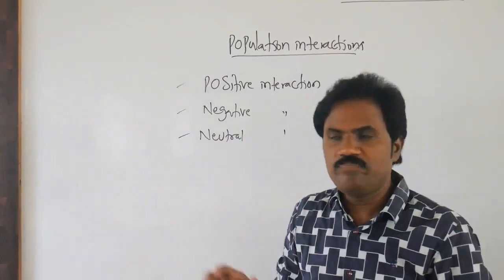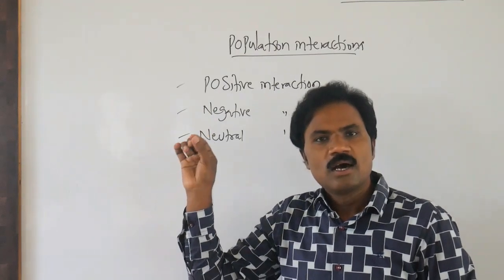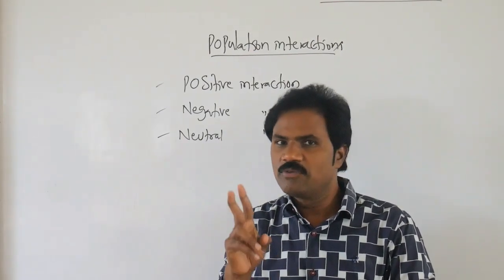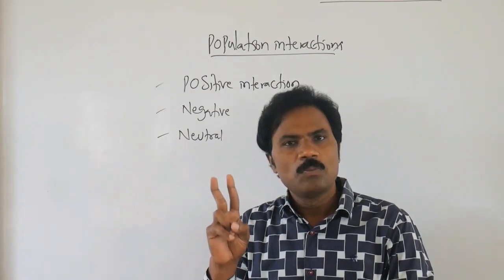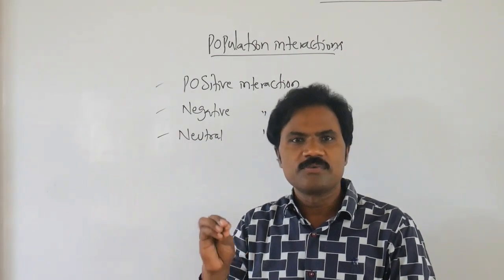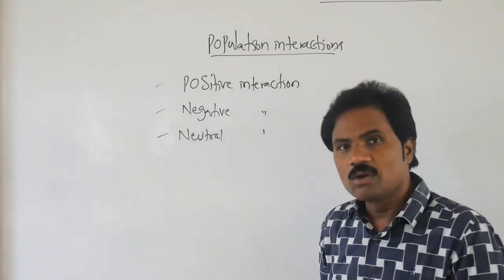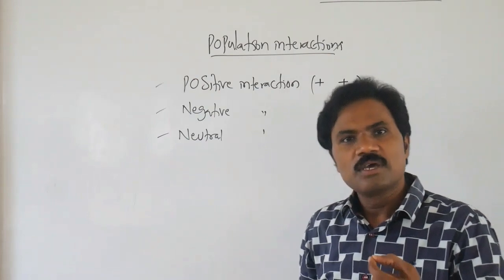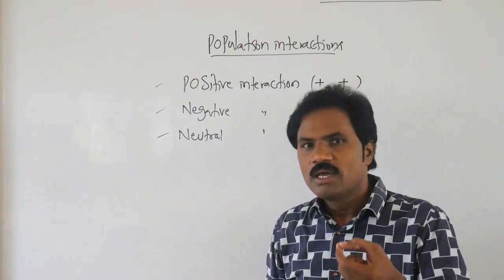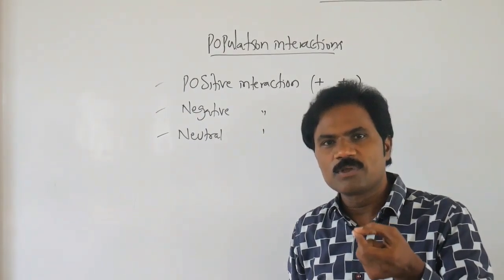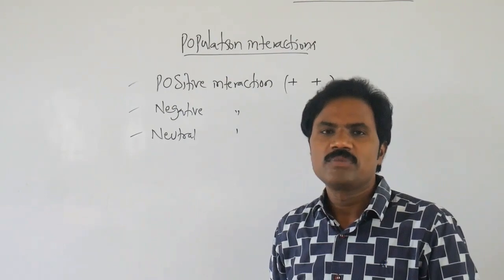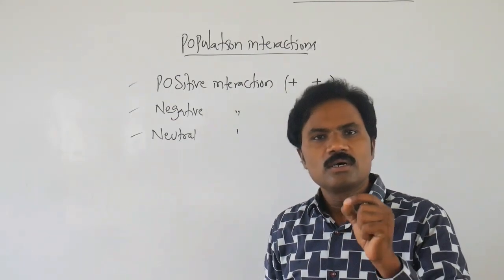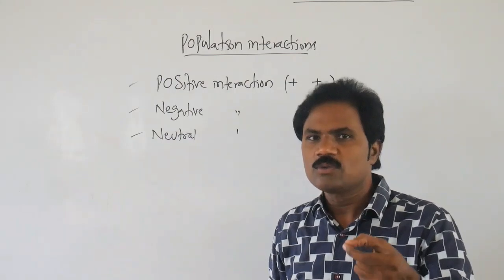Positive interaction — the name itself represents what it means. Between two organisms, both organisms are benefited. That type of interaction we call positive interaction. Here two organisms are participating; if the organism is benefited, it is denoted by the symbol plus (+1). Whenever the symbol represents minus, that specific organism becomes harmful — it has a loss.